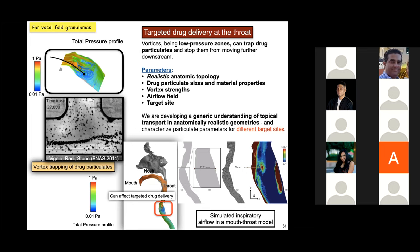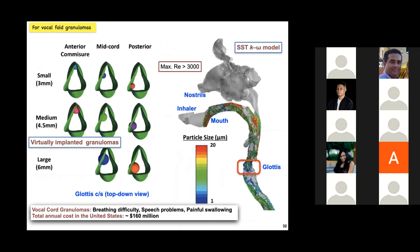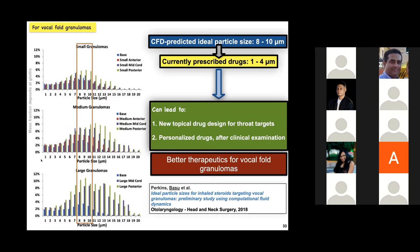This is the third topic, which will be brief: computational models applied to inhaled therapies. We have virtually implanted granulomas of different sizes at the glottis and simulated airflow through the mouth, throat, and nose, tracking what particle sizes will land directly at the glottis. The ideal size range to target the glottis is 8 to 10 microns, which is remarkable because drugs typically recommended right now offer a size range of 1 to 4 microns—meaning most of those particles escape the glottis and go into the lungs. A tool like CFD can help us design better drugs and increase targeted drug delivery by quite a few folds.